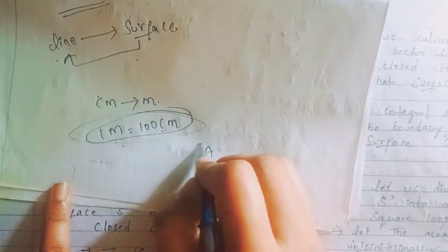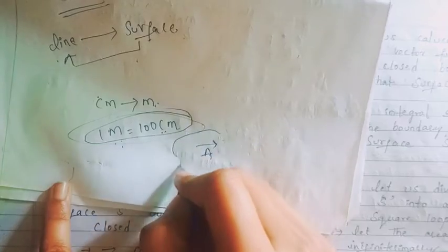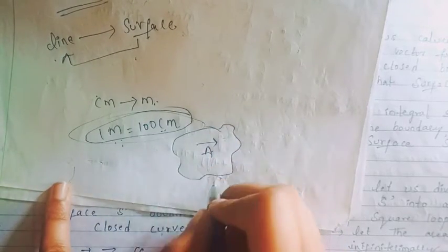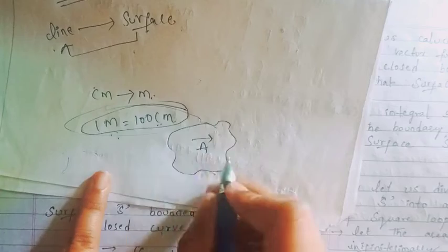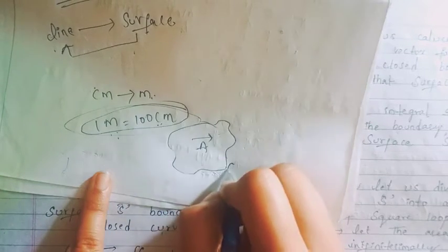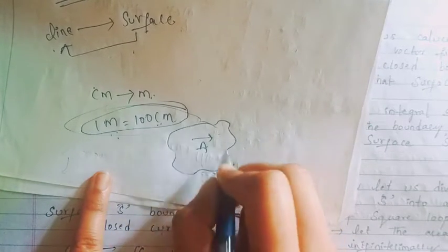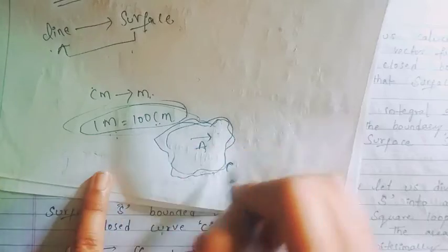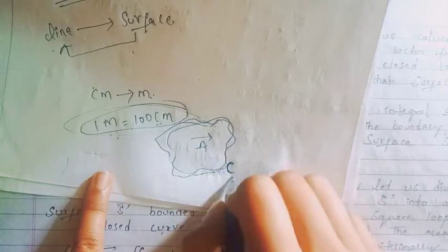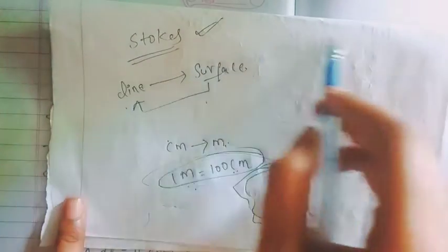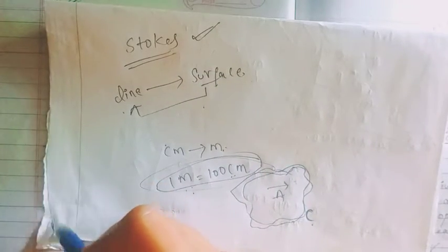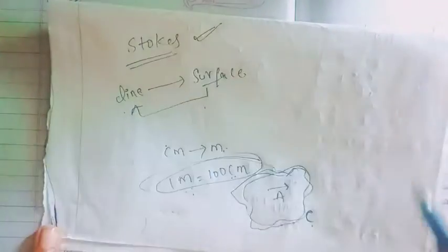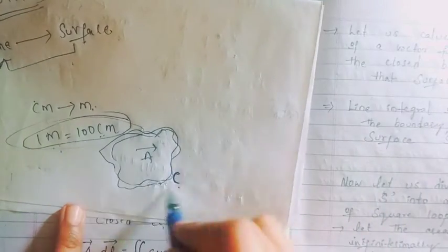Now consider a vector A placed in a region. This is a closed curve, and here we have a vector field. The boundary of the surface is C, and this vector field is defined along that closed curve C.